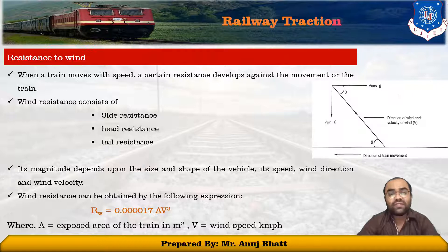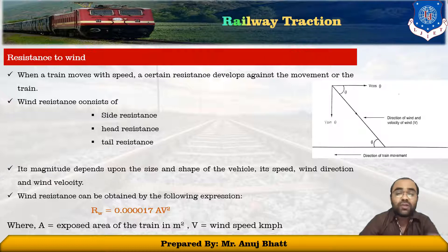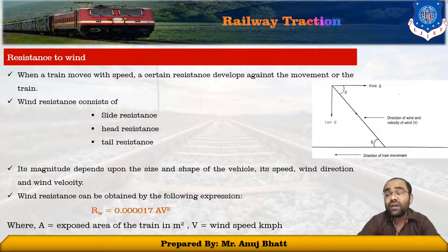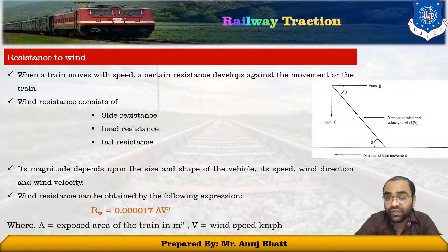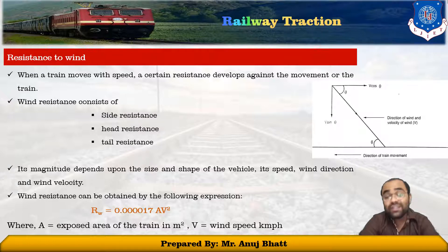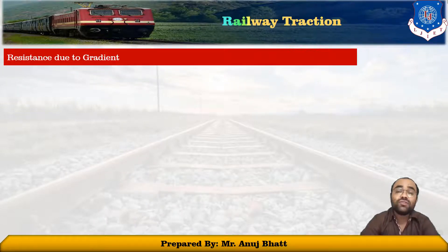When a train moves with speed, a certain resistance develops against its movement due to wind. These are side resistance, head resistance, and tail resistance. The magnitude depends upon the size and shape of the vehicle, the speed of the vehicle, wind direction, and wind velocity. Wind resistance depends on the angle at which the wind impinges the train, as shown in the figure. Here v is the speed of wind in km/h and theta is the angle of wind direction relative to the train's movement. The horizontal component is v·cos(theta). Wind resistance is also found by rw = 0.00017eb², which is also a negligible value. Next is resistance due to gradient.